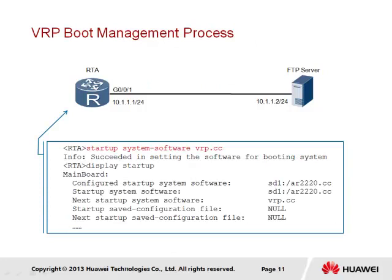The retrieved image file — transferred using either FTP or TFTP and identified by the .cc extension — should now be present within the storage of the client device, RTA. For the new image to be used, it must be specified as the image for next startup using the command 'startup system software' followed by the image name and extension. The vrp.cc file retrieved from the FTP server is now set as the next startup image. The 'display startup' command can then be used to confirm the next startup system software option now shows vrp.cc.